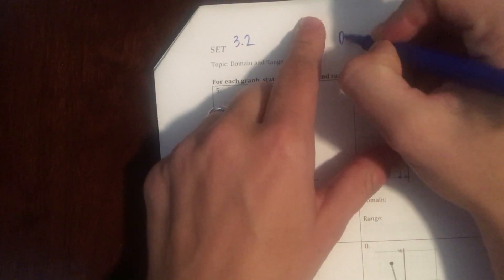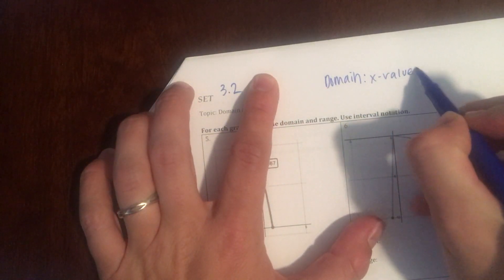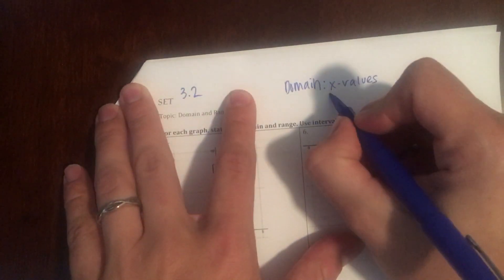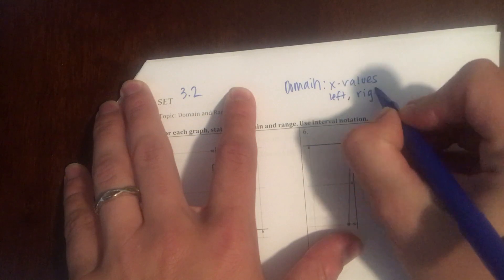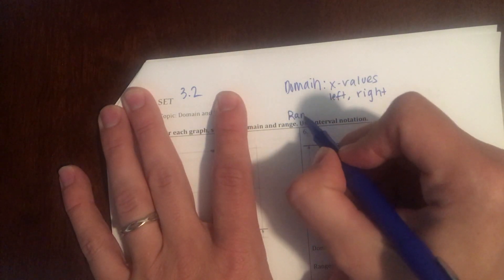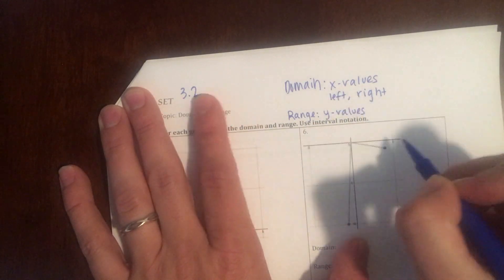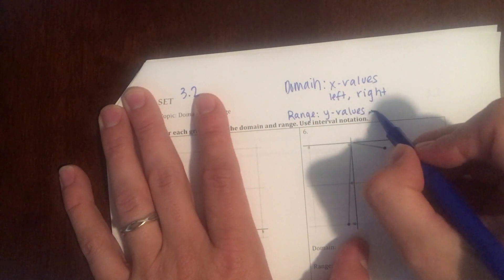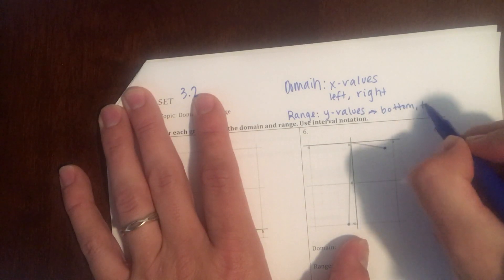So I'm going to just review a little up here. Domain is our x values, and we write our answers as the left value, comma, the right value. And range is our y values of our graph, and we write those as bottom value to top value.